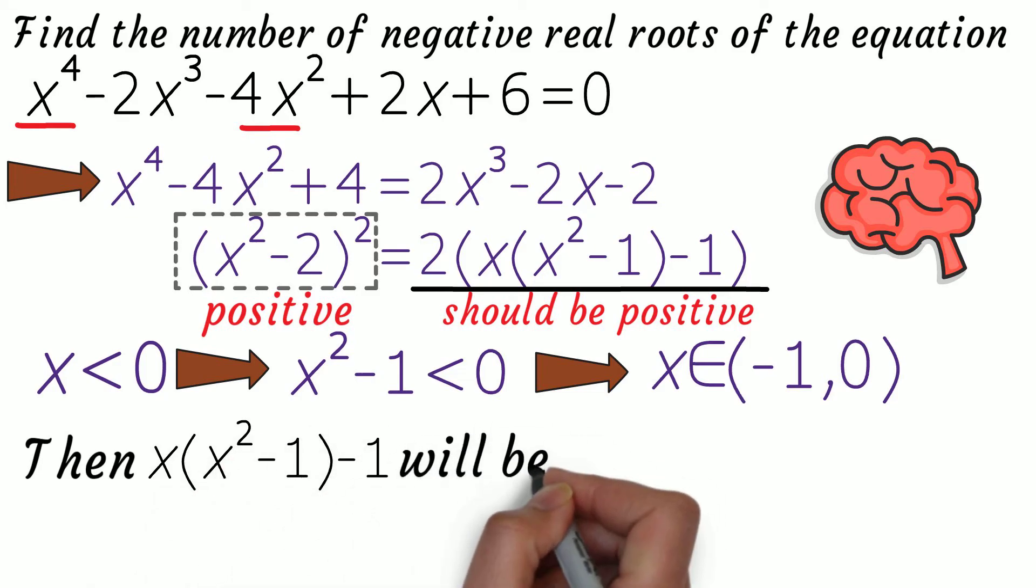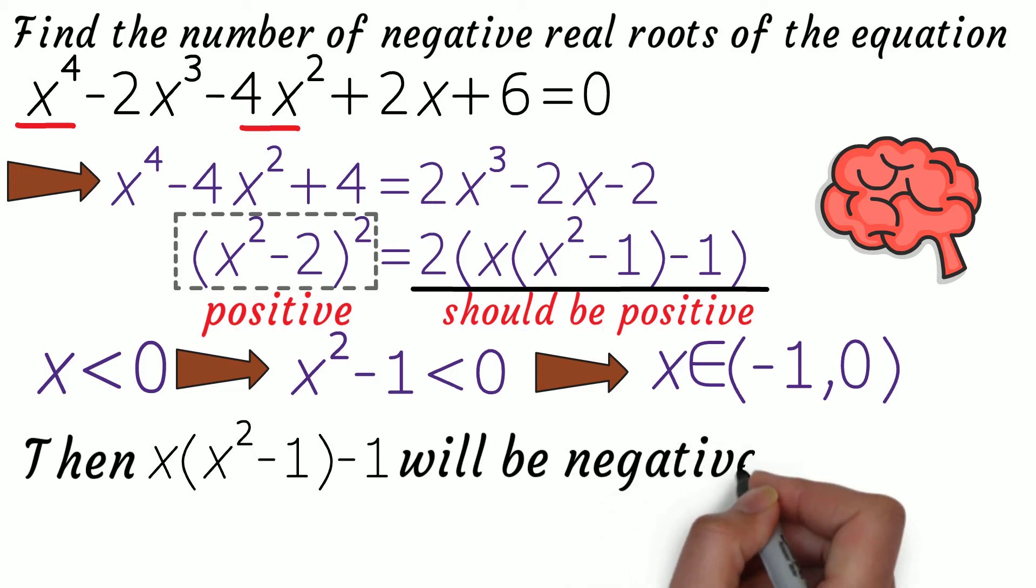Therefore, separating a -1 from here, we get for sure a negative number. So, when we substitute a negative real number in place of x, our left-hand side turns out to be positive, whereas our right-hand side turns out to be negative.